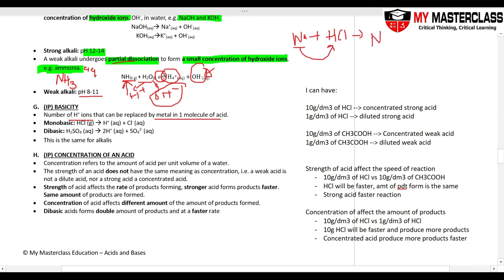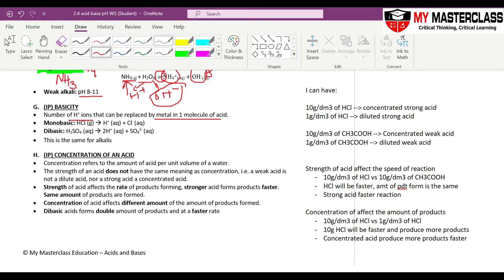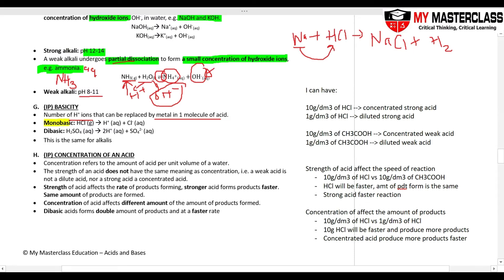In this case only one, you get NaCl plus H2. So this HCl, we call it monobasic acid because only one H+ is being kicked out.